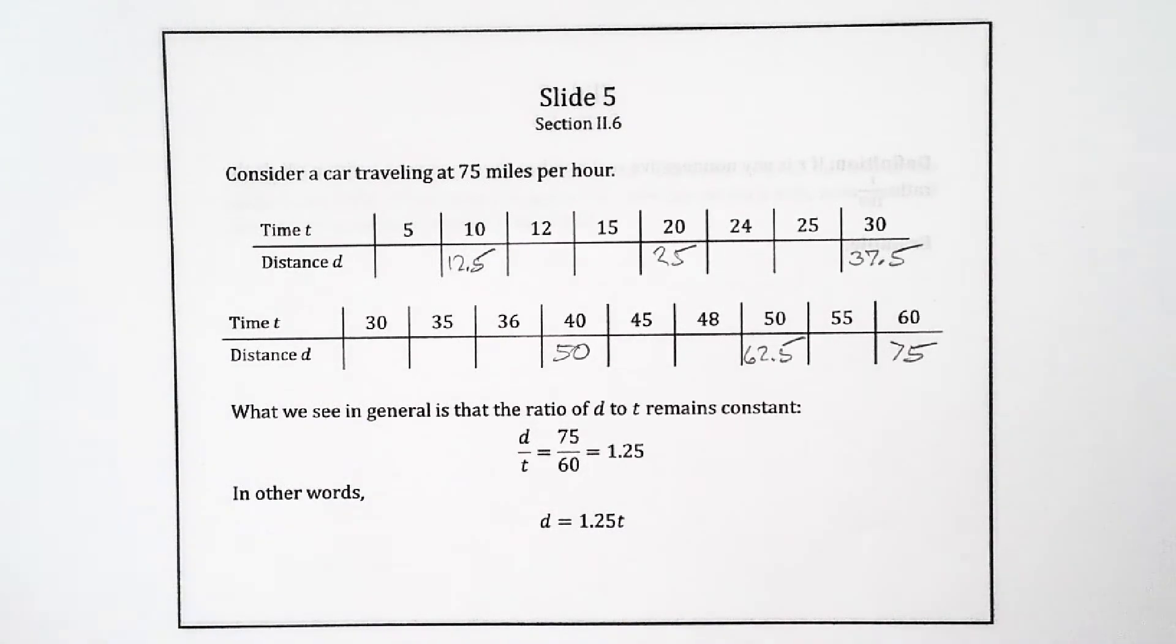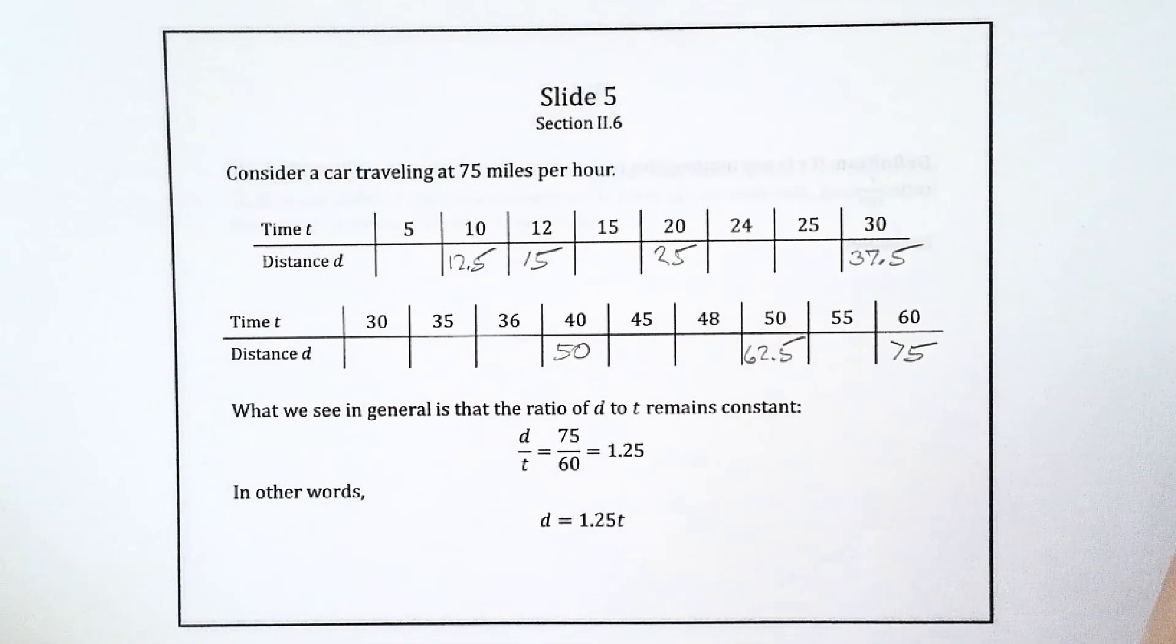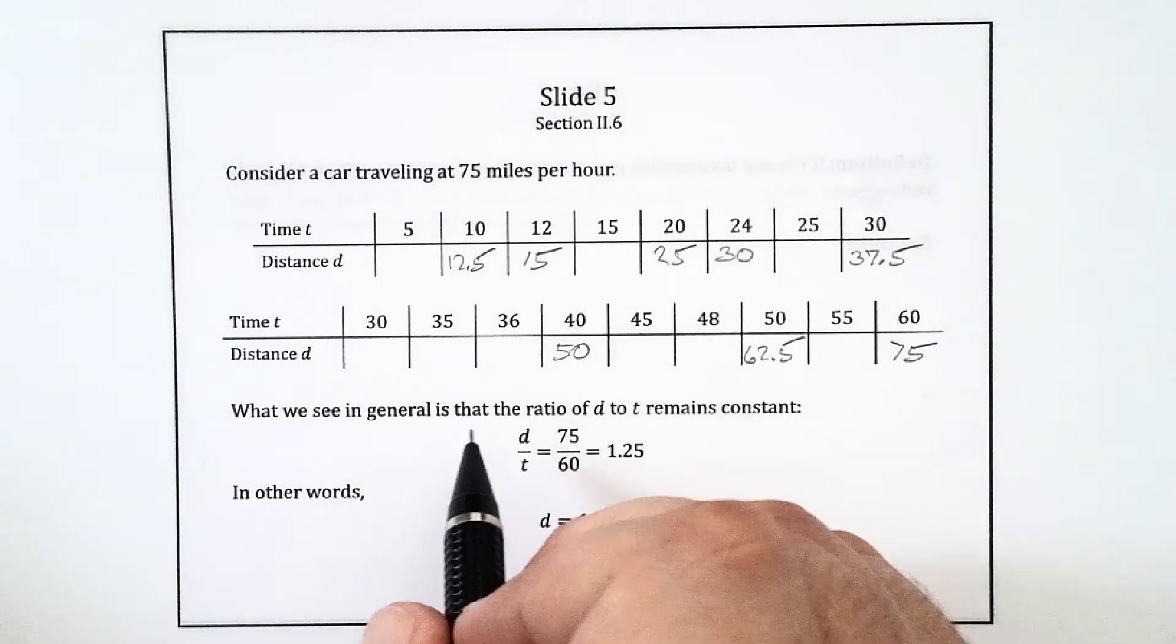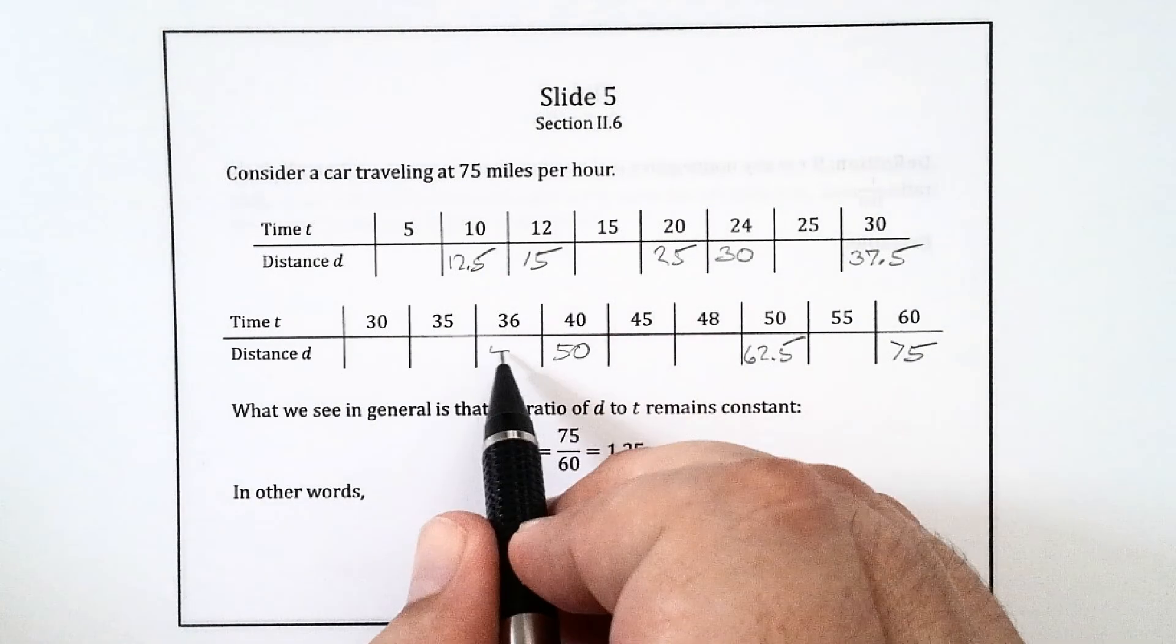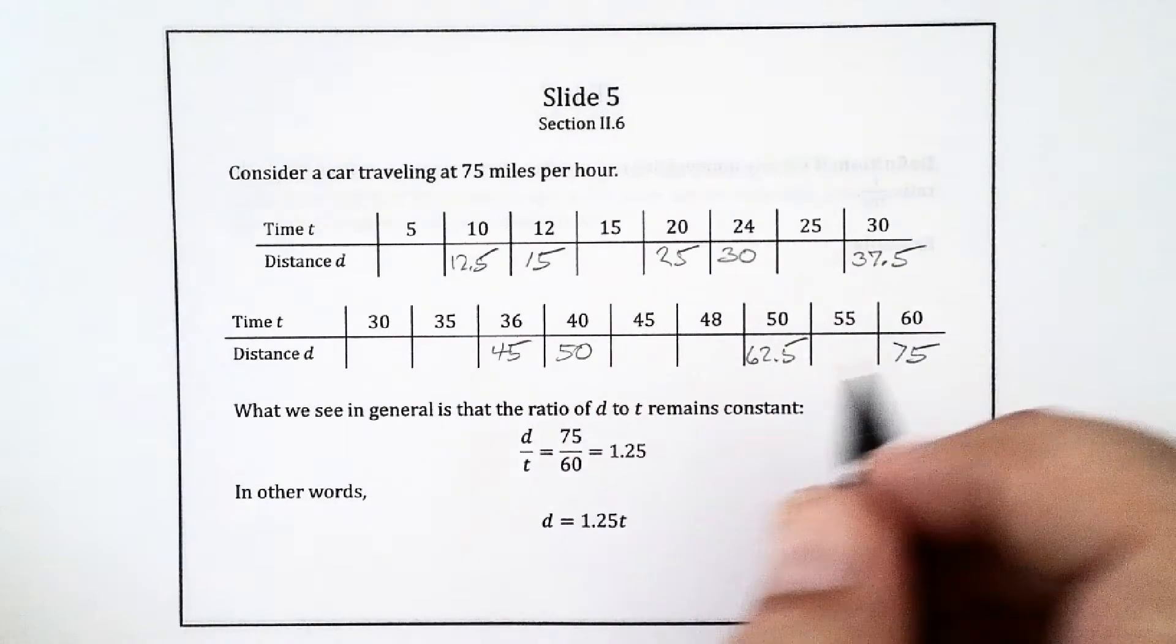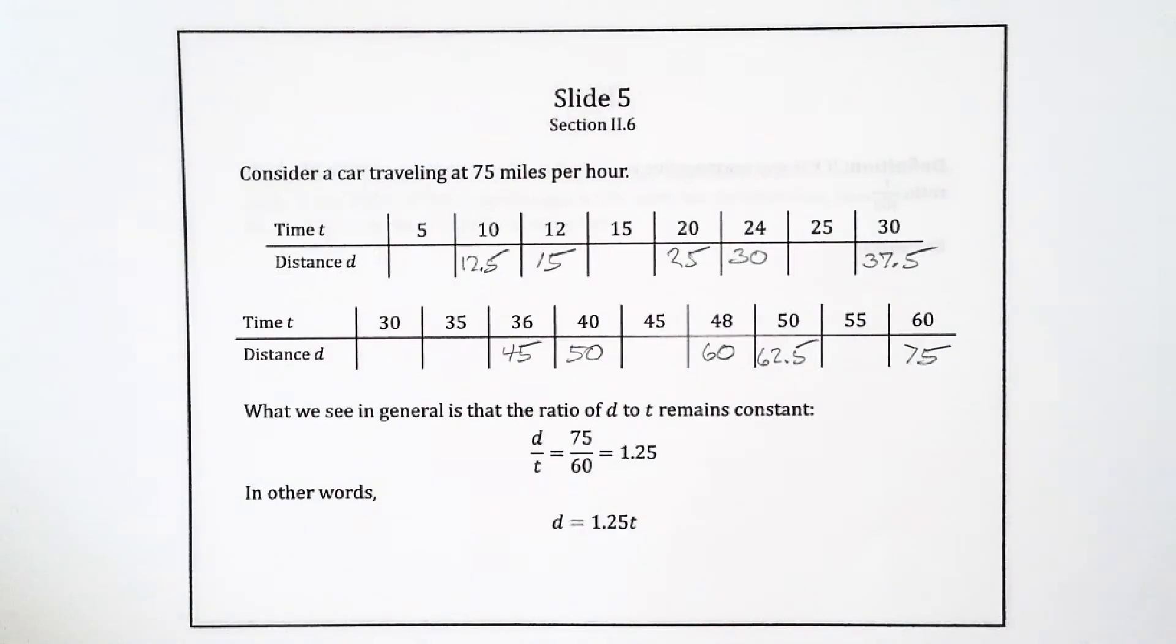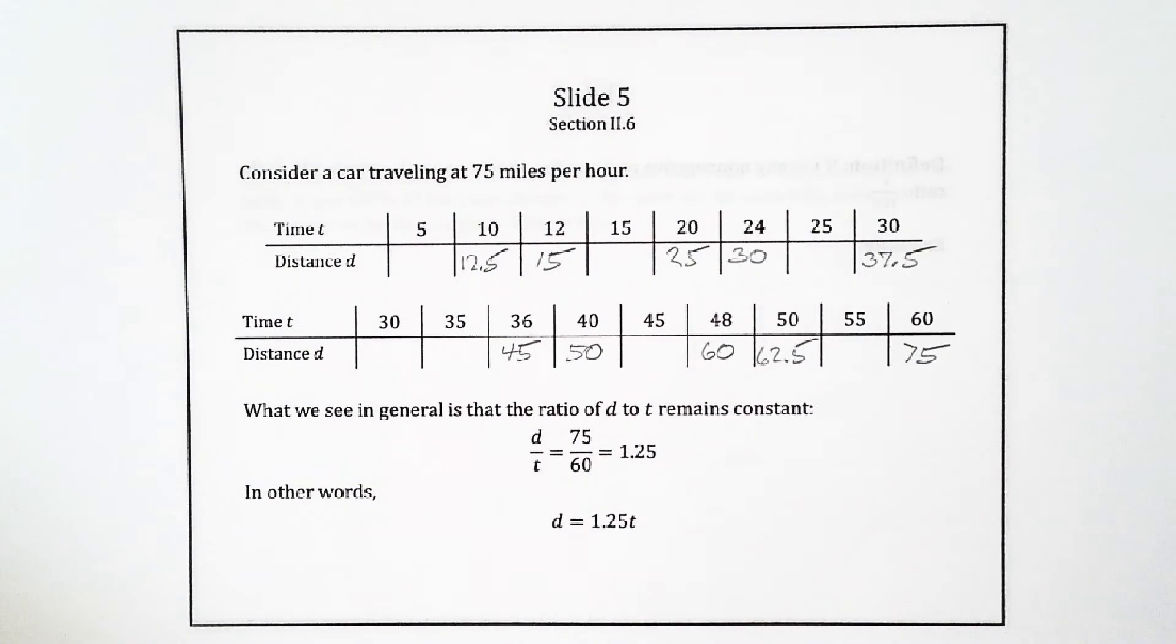Let's see, a fifth of 60 is 12, a fifth of 75 is 15. So in 12 minutes we'll have gone 15 miles. So that means in 24 minutes we'll have gone 30 miles, 36 minutes we'll have gone 45 miles, and in 48 minutes we'll have gone 60 miles. You just kind of keep filling it in like that.